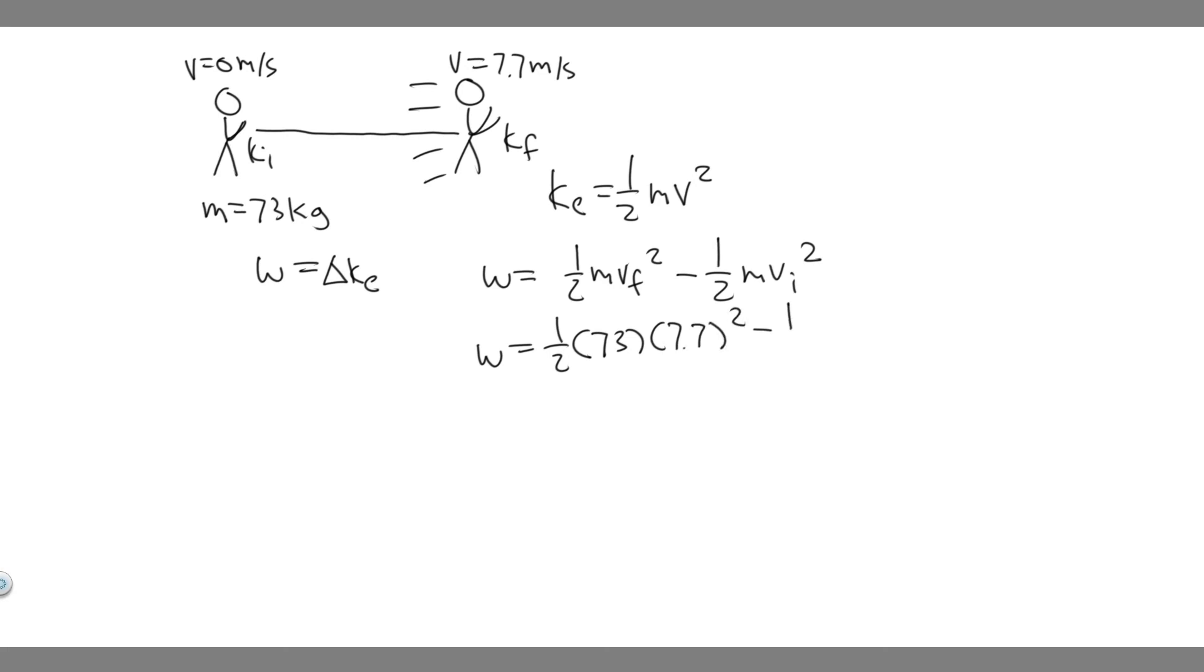So 7.7² minus 1/2 times the mass, which is 73. Notice the initial velocity is 0. So 0² is still 0, and this whole side becomes 0. So in this case, since they start from rest and their velocity is 0, it's really just equal to the final kinetic energy.